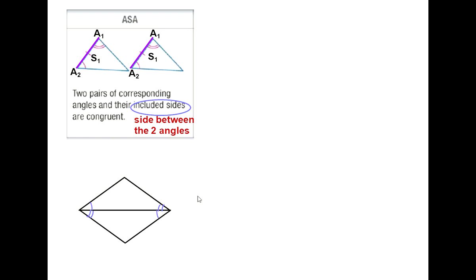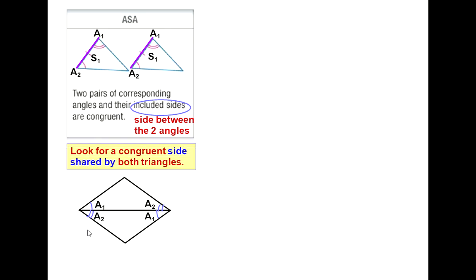Here's an example. We have the angles with one tick mark, we have the angles with two tick marks, and we are reminded by the yellow box to look for a congruent side — I've made it purple. We can mark that as S1, and it looks exactly like one of these triangles but tilted, with A, then S, then A. So therefore, the triangles are congruent by ASA.